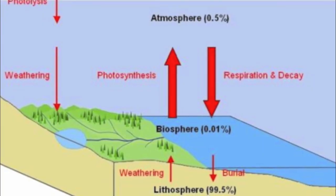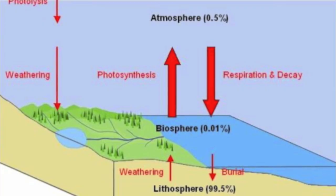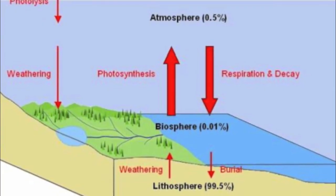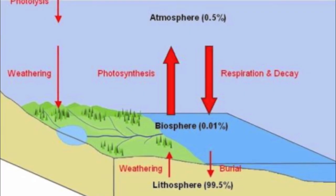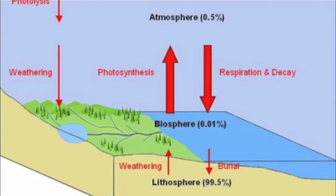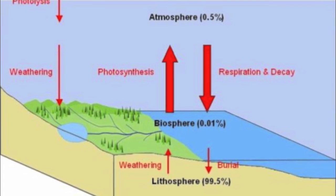Most of the Oxygen is stored in the lithosphere, and later it moves out into the biosphere, and then into the atmosphere during photosynthesis. The Oxygen then moves back down the cycle through respiration and decay back into the biosphere, and later into the lithosphere by burial.